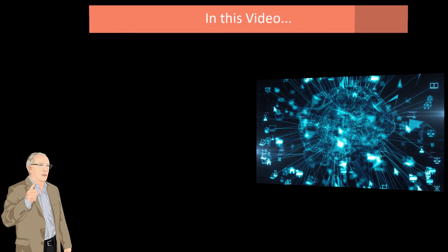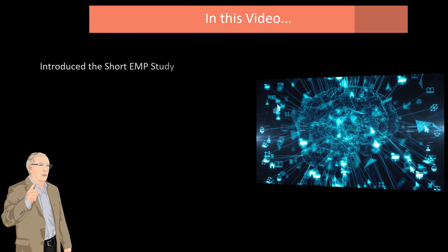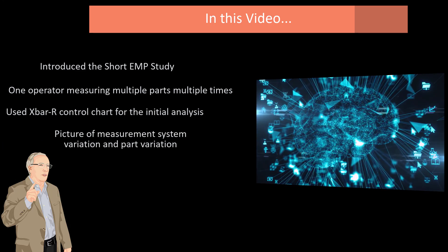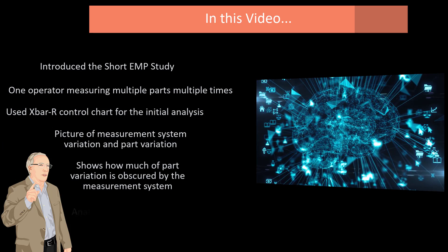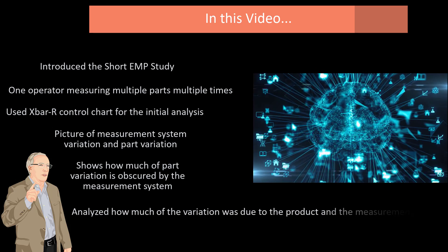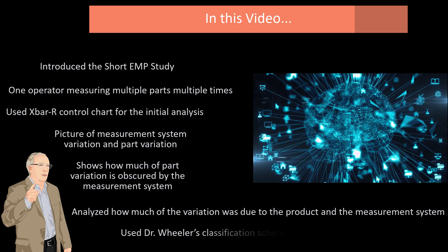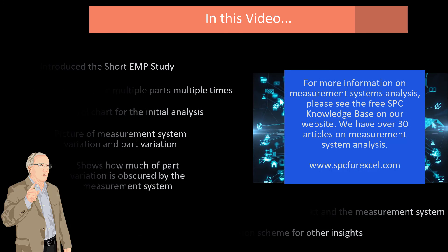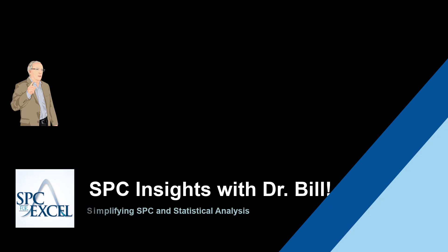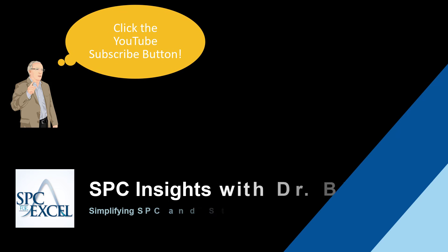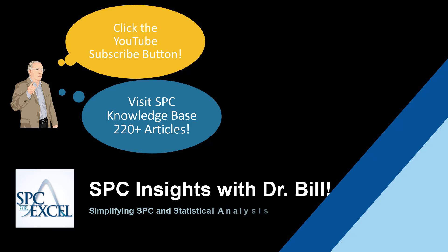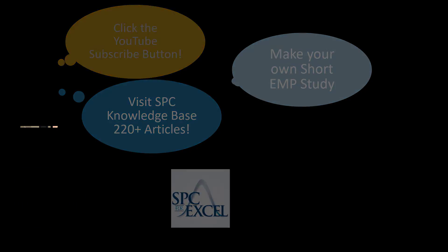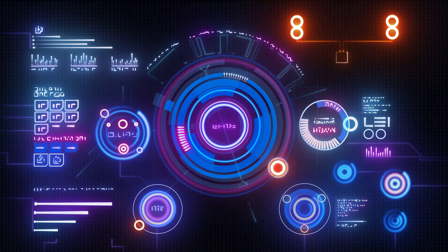In this video we've taken a look at the EMP study. We introduced the Short Study — one operator measuring multiple parts multiple times — and used the X-bar and R chart for the initial analysis. It gives us a picture of measurement system variation versus part variation, and how much is obscured by the measurement system. We calculated our percent variances and used the classification scheme. For more information on the classification scheme, please see our SPC knowledge base, which has over 30 articles on measurement systems analysis. You can also download our demo and do your own Short EMP Study. Thank you for watching.